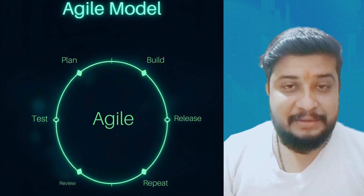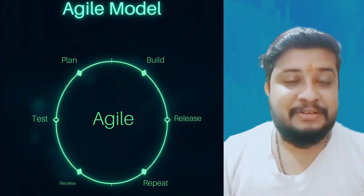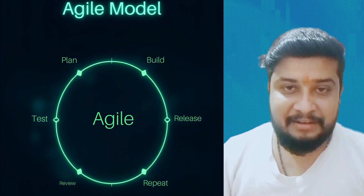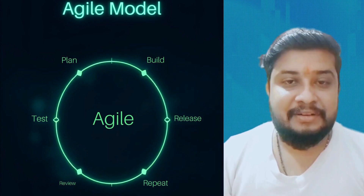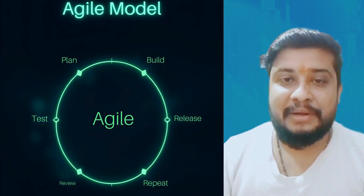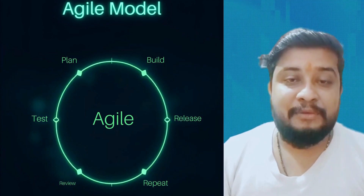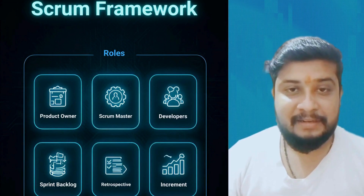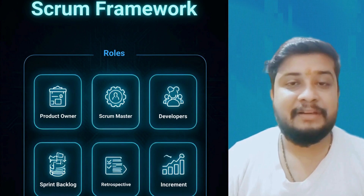Agile came about because the software world started changing very fast — applications, cloud services, websites — they all do frequent updates. In simple terms, Agile works in small cycles, delivers faster, takes continuous feedback, and adapts quickly. So Agile is flexible, modern, and perfect for the fast-changing world.